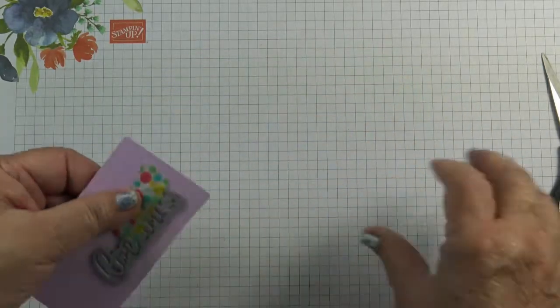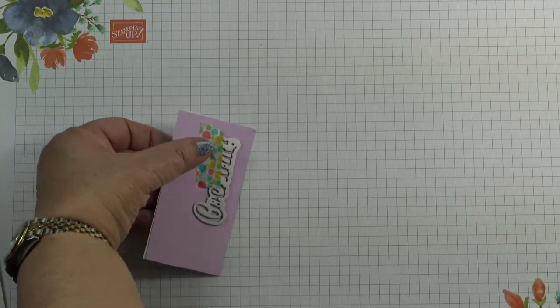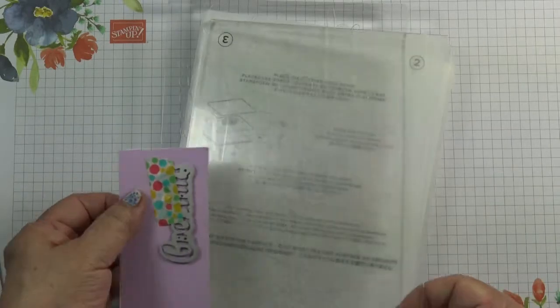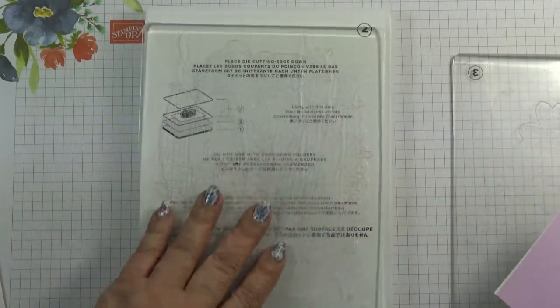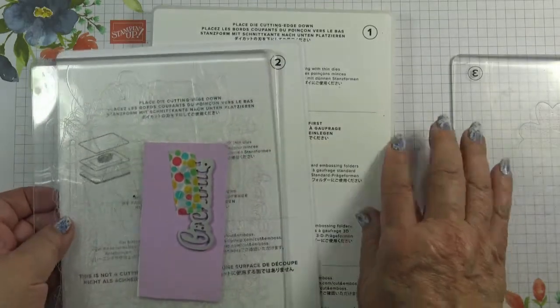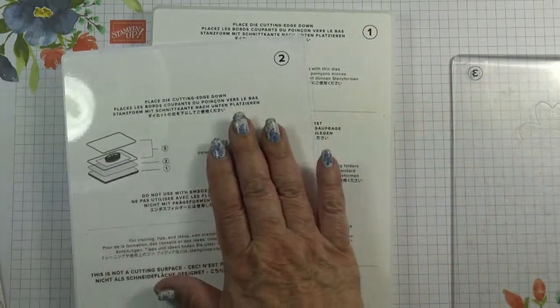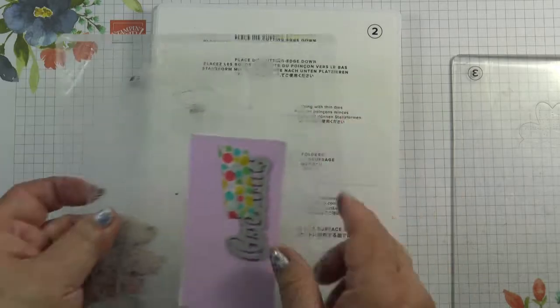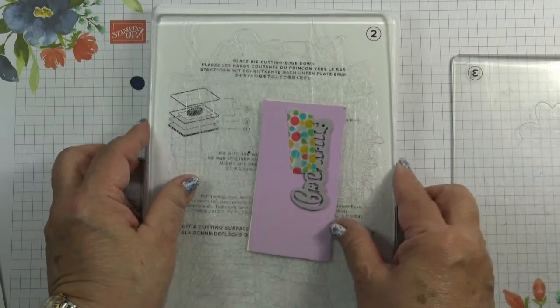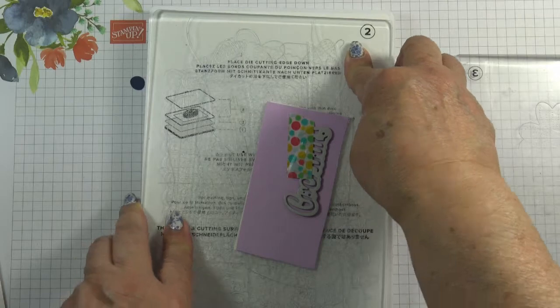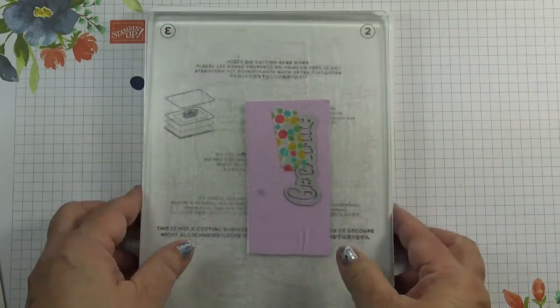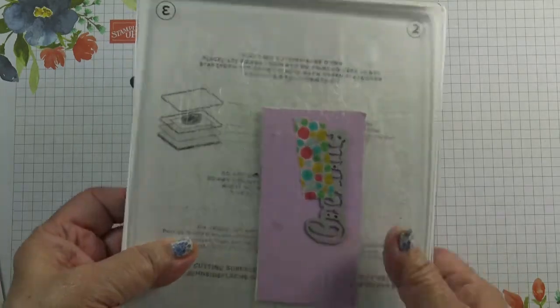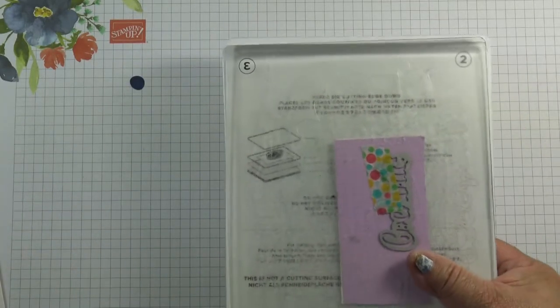The pressure from the die cutting machine will help to attach the washi tape to it. So then bring in your platform - you need platform one, platform two which is the thin die adapter, your base cutting plate which is one of the platform threes, and a second platform three on top. That's your sandwich, you're ready to run it through the die cutting machine.